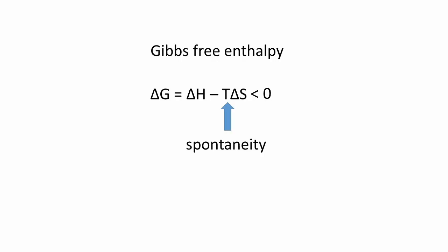Remember, for it to occur, the Gibbs free enthalpy change must be negative. Therefore, if delta G equals delta H minus T times delta S, the reaction will always occur if delta H is negative and delta S is positive.